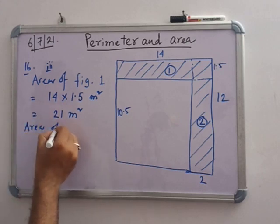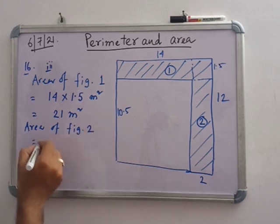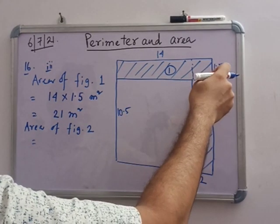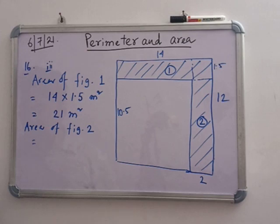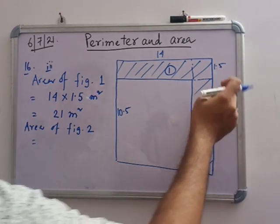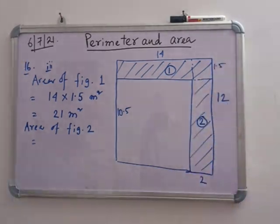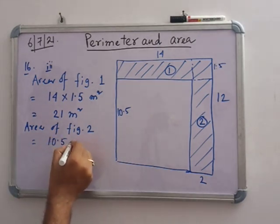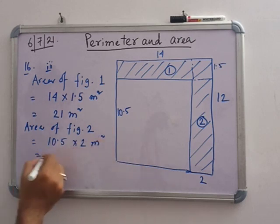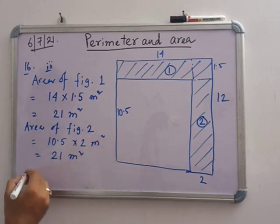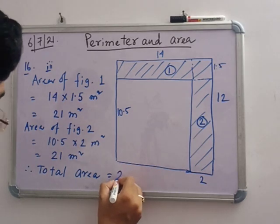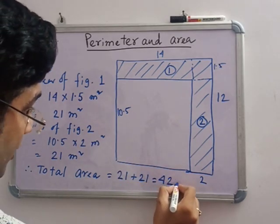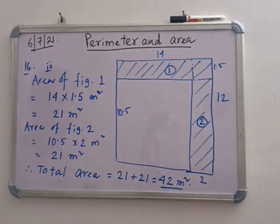Area of figure 2: this portion has a width of 2, and the length up to this point is 10.5. So 10.5 into 2 equals 21 meter square. Total area is 21 plus 21, that is 42 meter square. Note it down.